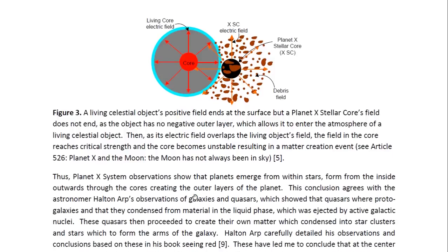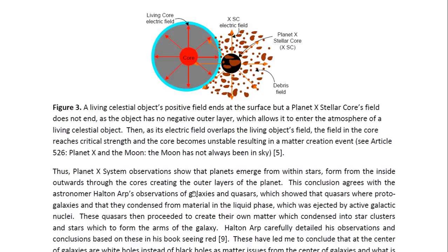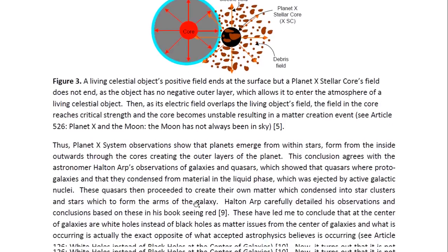And so, thus, the Planet X system observations show that planets emerge from within stars, formed from the inside outwards through the cores, creating the outer layers of the plasma. This conclusion agrees with the astronomer Halton Arp's observations of galaxies and quasars, which show that quasars were proto-galaxies, and that they condensed from material in the liquid phase, which was ejected by active galactic nuclei. These quasars then proceeded to create their own matter, which condensed into star clusters and stars, which then would go to form the arms of the galaxy.